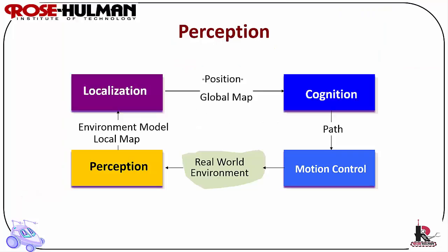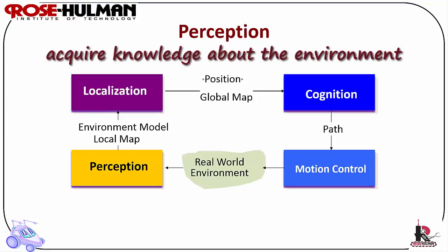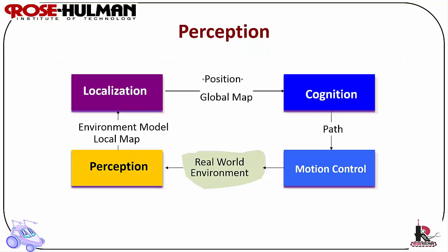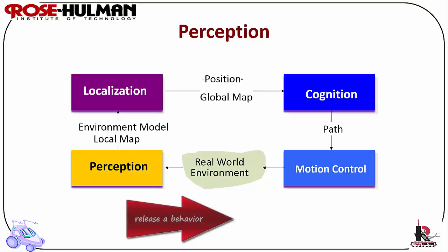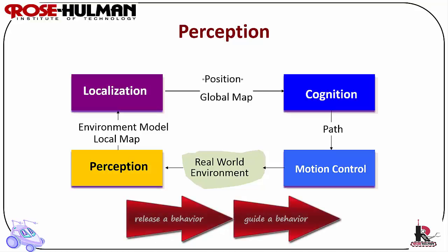One of the most important tasks of an autonomous mobile robot is perception. Perception is used for the robot to acquire knowledge from its environment. It involves taking measurements using various sensors and extracting meaningful information. Perception in a reactive robot system has two roles: to release the behavior and to guide the actions of the behavior. All sensing is behavior specific.